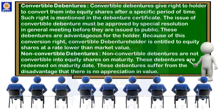Let us see the last category of debentures. This category is of two types: convertible debentures and non-convertible debentures. Convertible debentures are those which are converted into equity shares after a specific period of time; the debenture certificate is surrendered and the debenture holder is issued equity shares, making him an equity shareholder and owner of the company. A special resolution in a general meeting is required before issuing convertible debentures. Non-convertible debentures are not converted into equity shares; they are like ordinary debentures and are paid back at the maturity date.